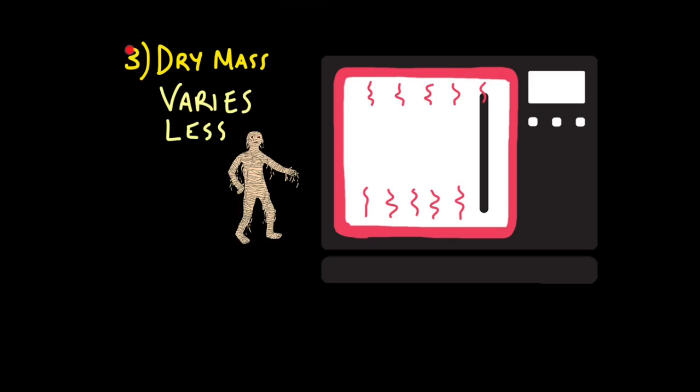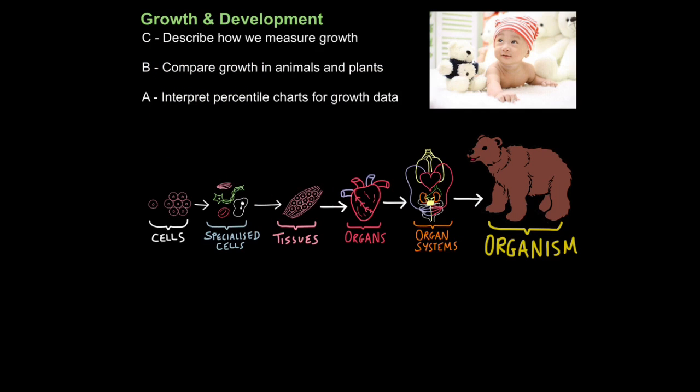For obvious reasons, we don't weigh our dry mass. We only weigh our wet mass. So if you understand that we can weigh dry mass, we can weigh wet mass, and we can also measure size, then you understand how we measure growth.